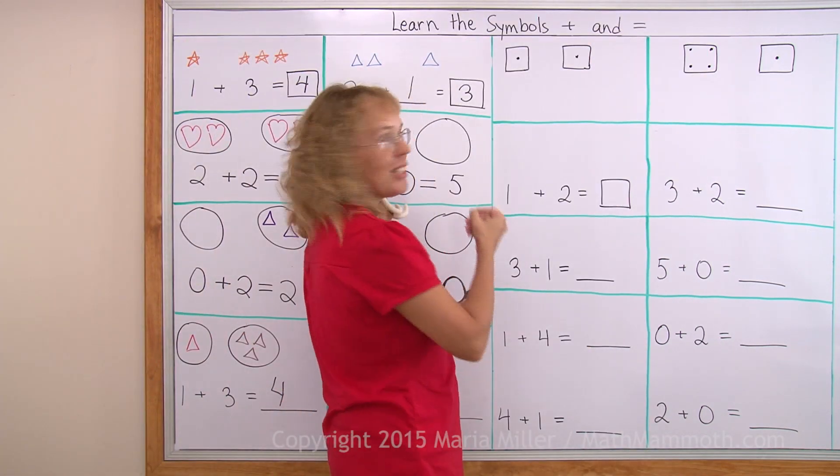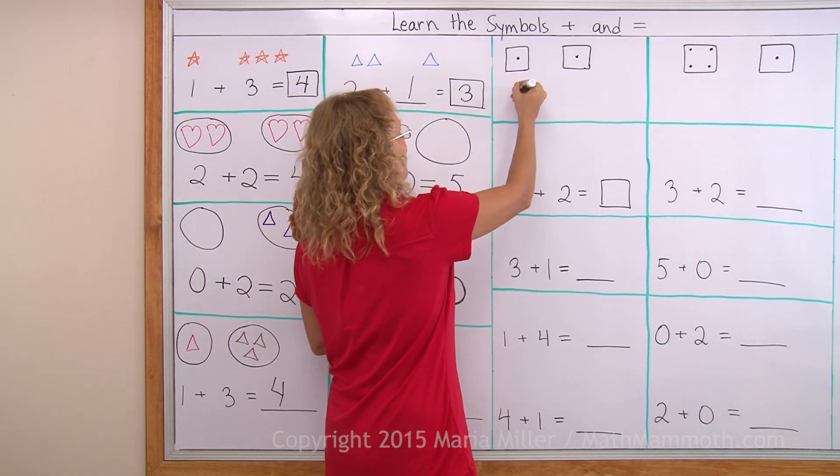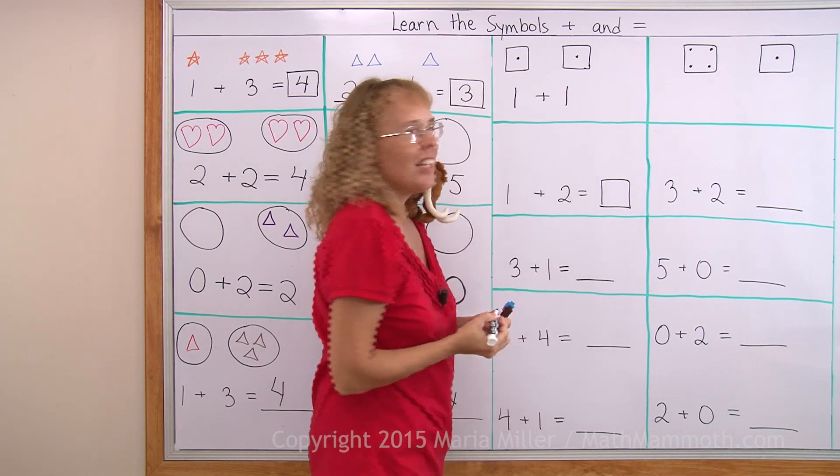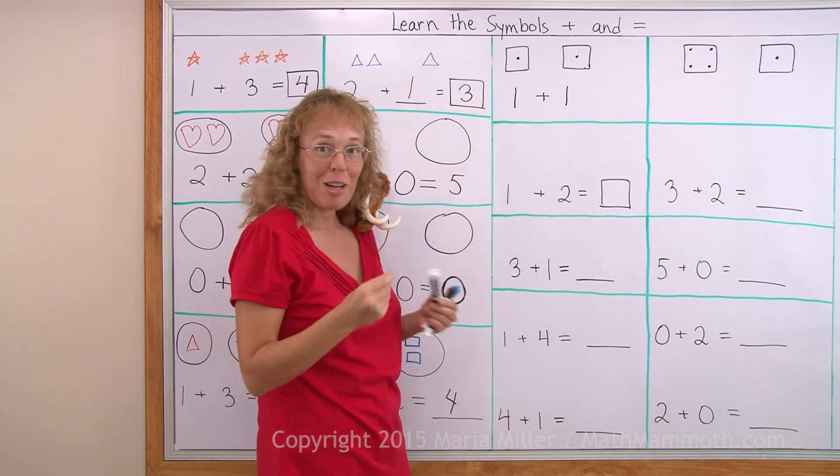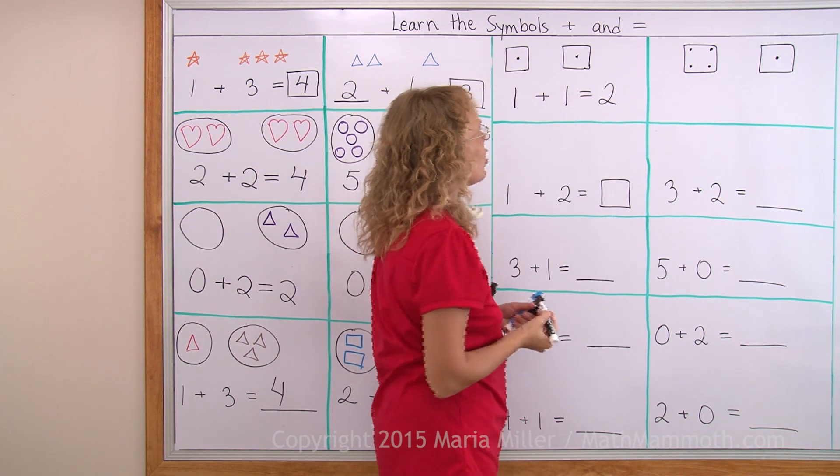Over here we have some dominos. There is one dot here. So I write one. Then plus. And one dot here. One. That's about as easy addition problem you can have. One plus one equals how much? Yes. It is two.